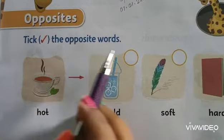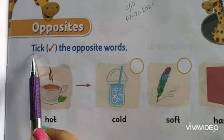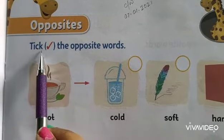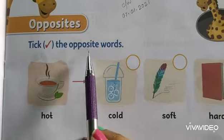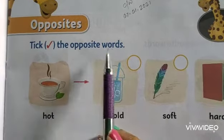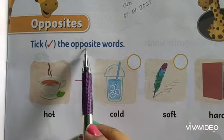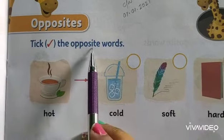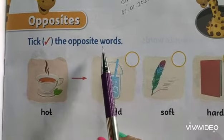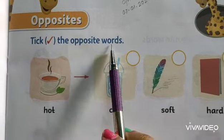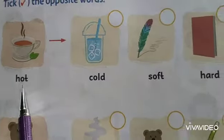Now read the heading: tick — T-I-C-K — tick the — T-H-E — the opposite words — O-P-P-O-S-I-T-E — opposite, words — W-O-R-D-S — words.